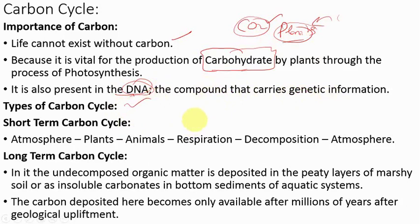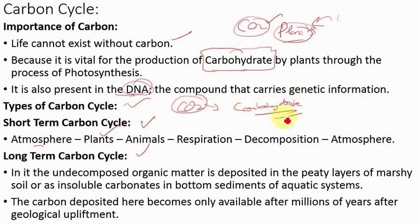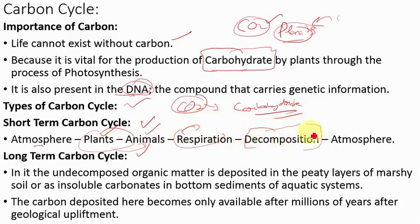There are two types of carbon cycle: short-term and long-term. In the short-term carbon cycle, carbon dioxide in the atmosphere is used by plants in photosynthesis, forming carbohydrates. These plants are eaten by animals, transferring energy. Animals release carbon through respiration back to the atmosphere. Remaining carbon stored in their bodies is released into the atmosphere after decomposition — when they die, saprophytes act on their bodies and release this carbon to the atmosphere. So the cycle starts and ends at the atmosphere.